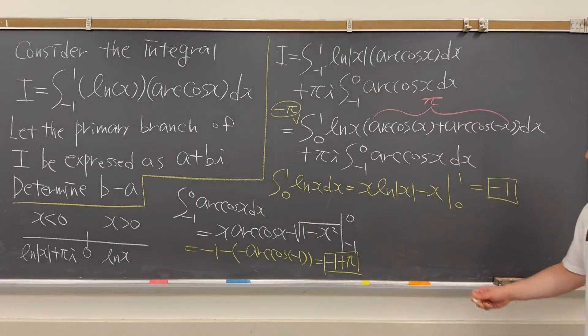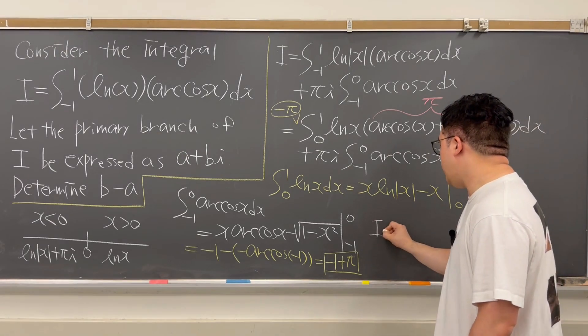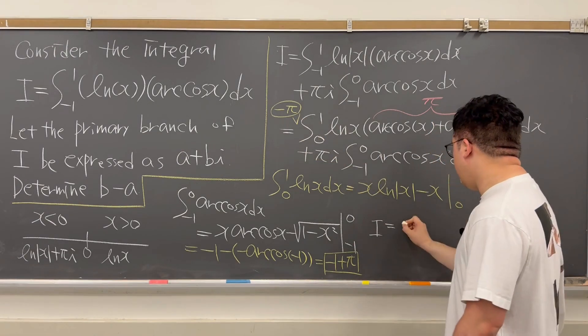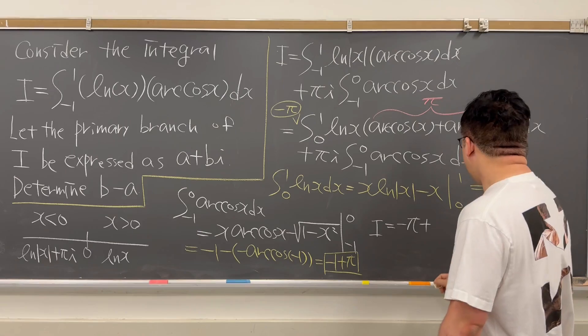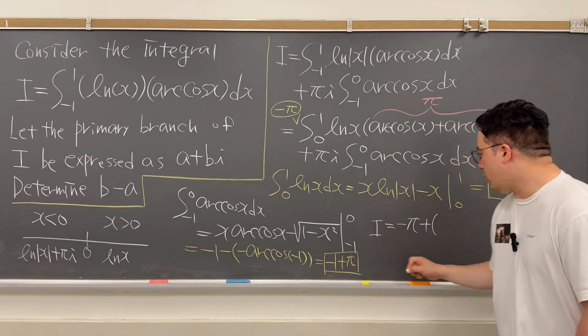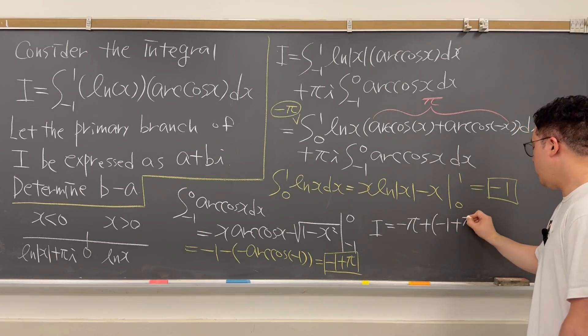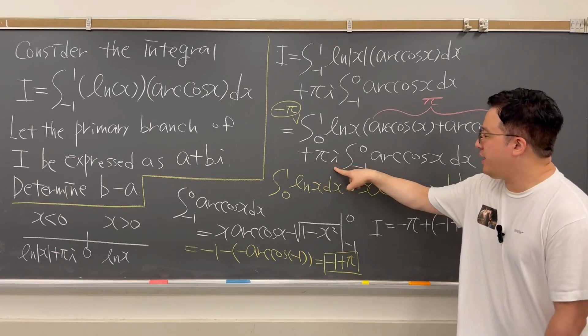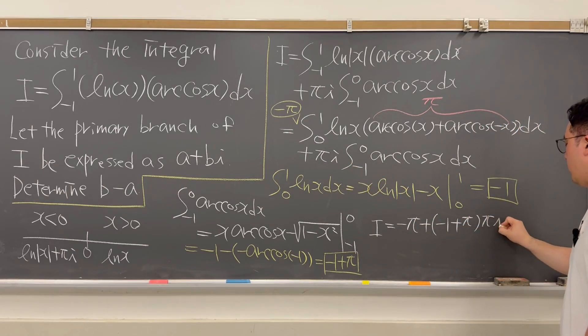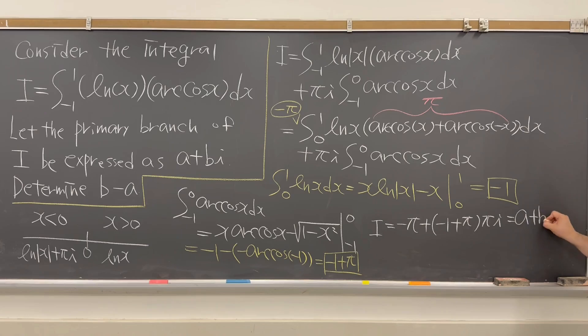Okay, from this, what we need to get is your integral I should be now equal to negative π plus parenthesis, negative 1 plus π times πi. Okay, that should be equal to just a plus bi.